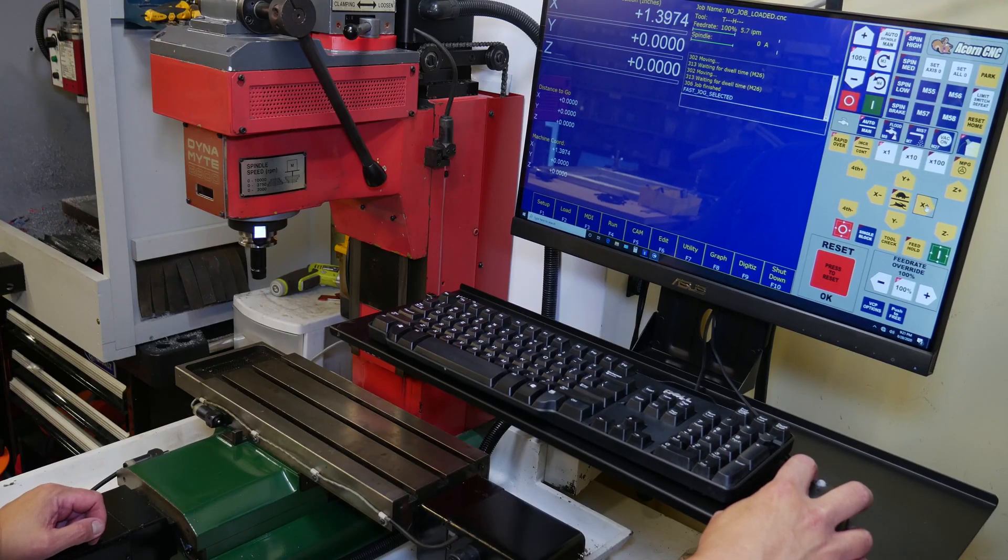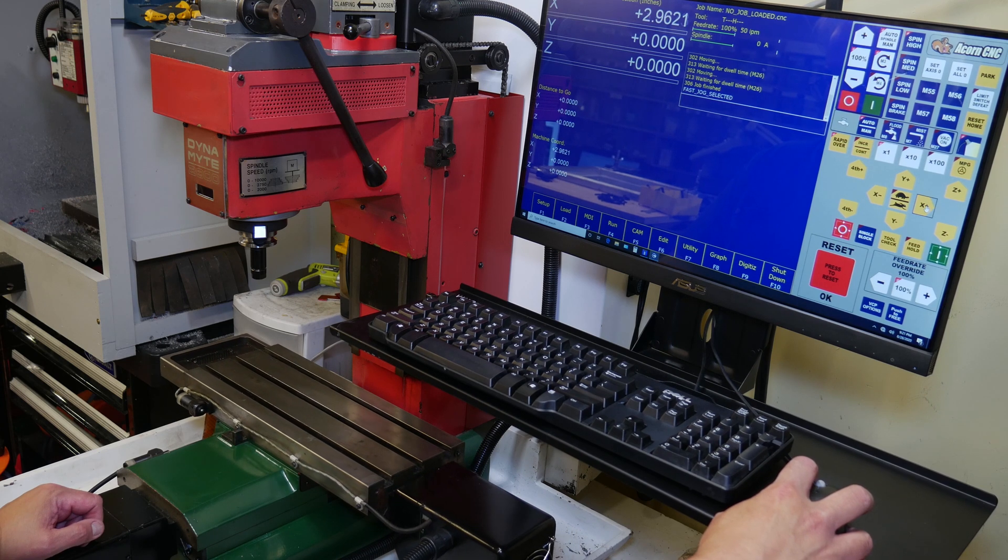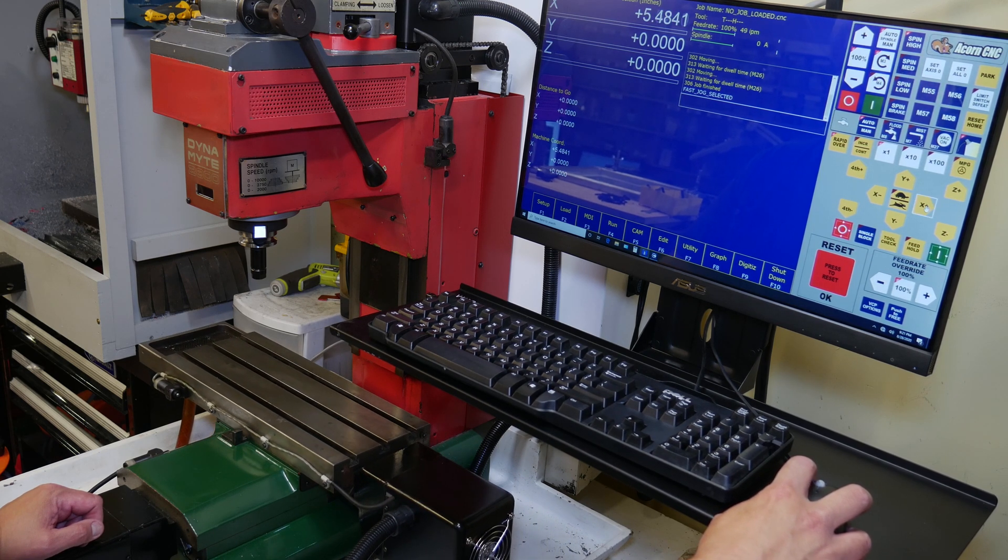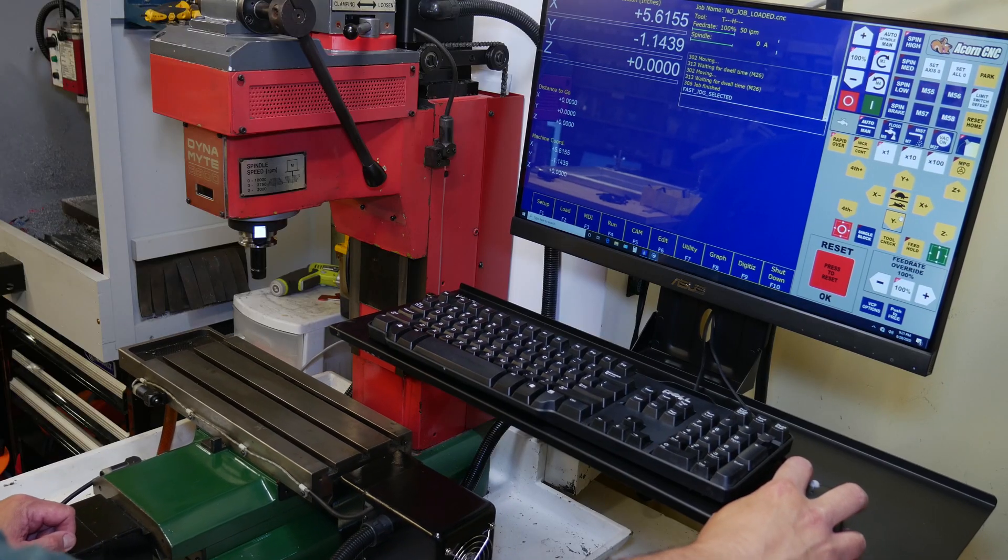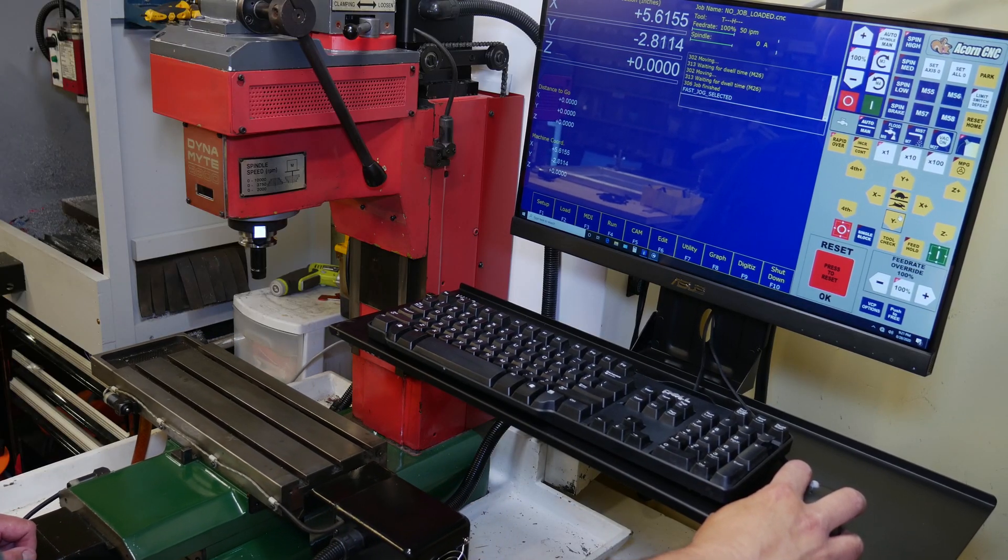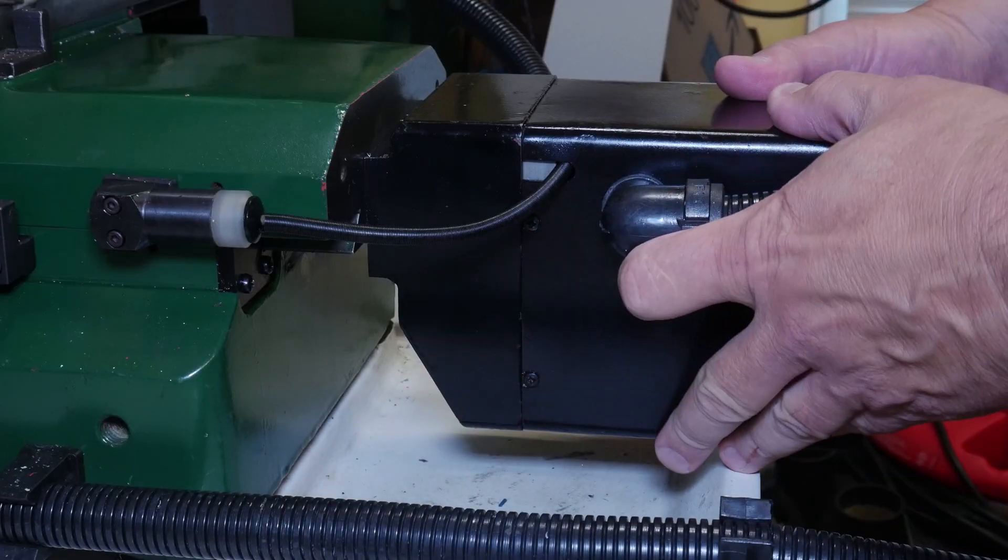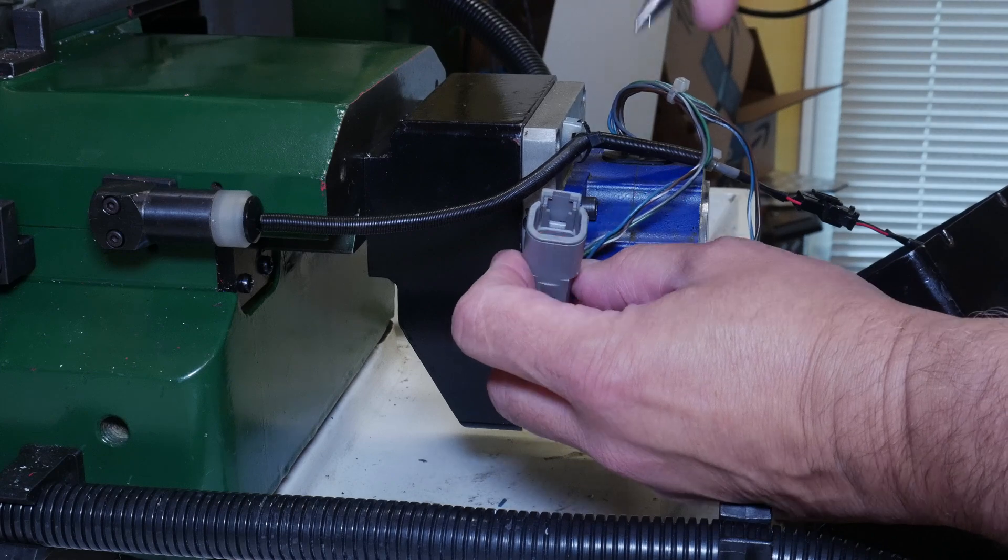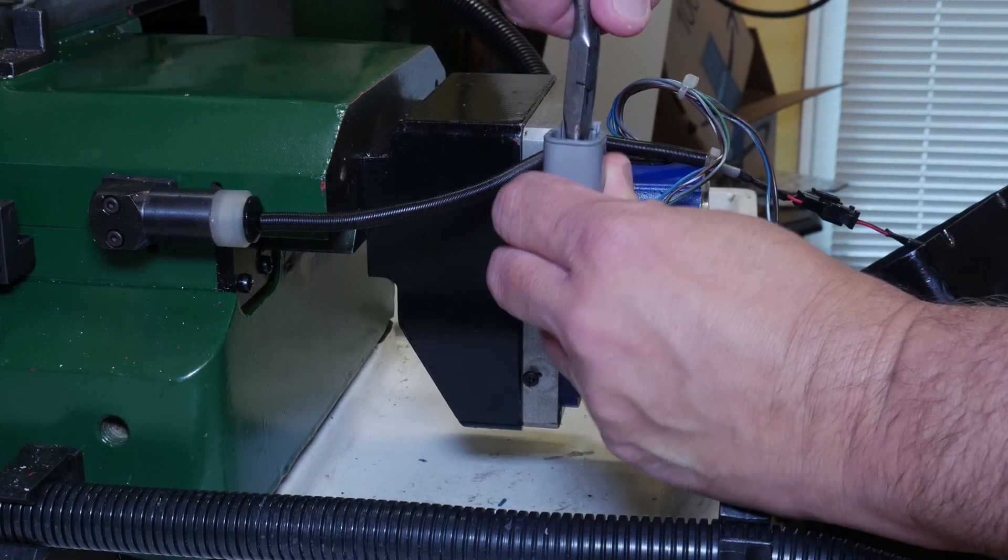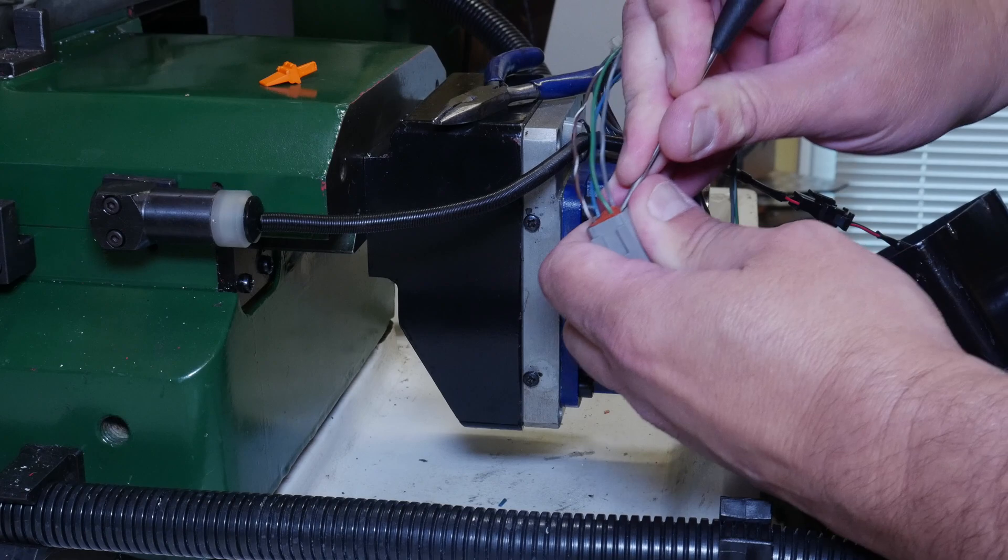I did a bit of jogging the machine around and discovered the Y-axis was going the wrong way. I could have inverted this in the Centroid CNC-12 setup, and in hindsight, I probably should have, but none of the other axes were inverted, so I decided I would just swap the polarity on one of the coils in the stepper motor.